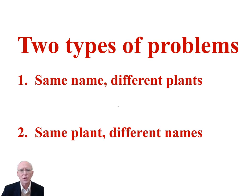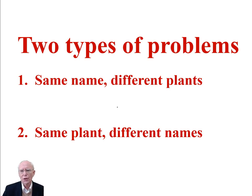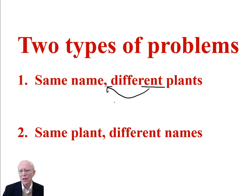In this video, we're going to continue our discussion of plant nomenclature. We're going to start discussing two different types of problems that occur in nomenclature. One of these problems occurs when we have different plants, but they are given the same name by different authors, and this is the problem that we call the problem of homonyms.